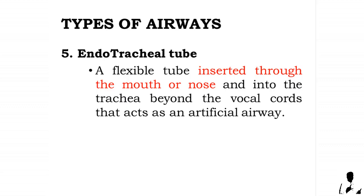Five: the endotracheal tube. It is a flexible tube inserted through the mouth or nose and into the trachea beyond the vocal cords, acting as an artificial airway.